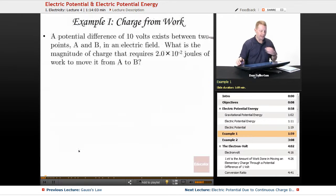So taking a look at charge from work. A potential difference of 10 volts exists between two points A and B in an electric field. What is the magnitude of charge that requires 2 times 10 to the minus 2 joules of work to move it from A to B?